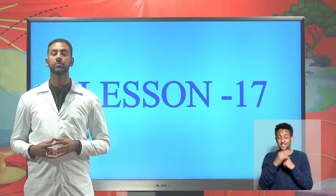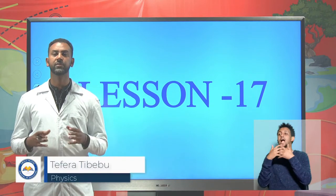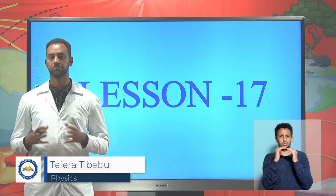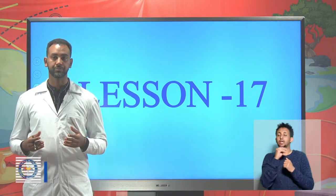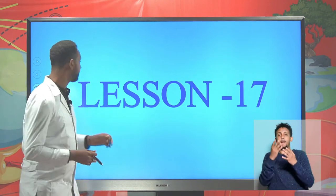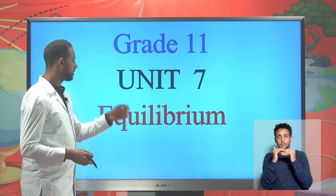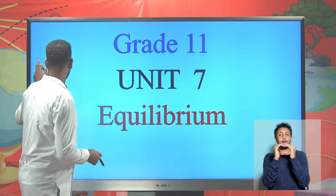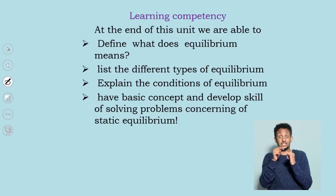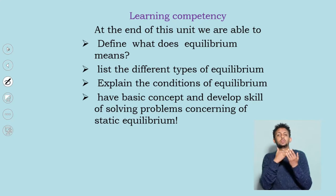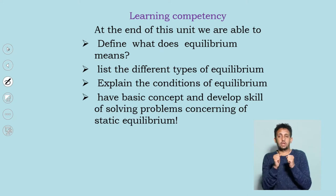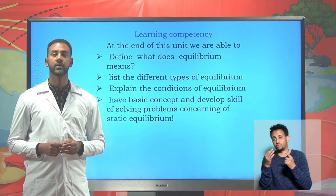We'll try to see about mechanical equilibrium. There might be different types of equilibrium like chemical equilibrium and so on, but here we focus on mechanical equilibrium. Under Unit 7, which is equilibrium, after the end of these units, you are able to define what equilibrium means, and you'll be able to see the different types of equilibrium as well as the different conditions of equilibrium.